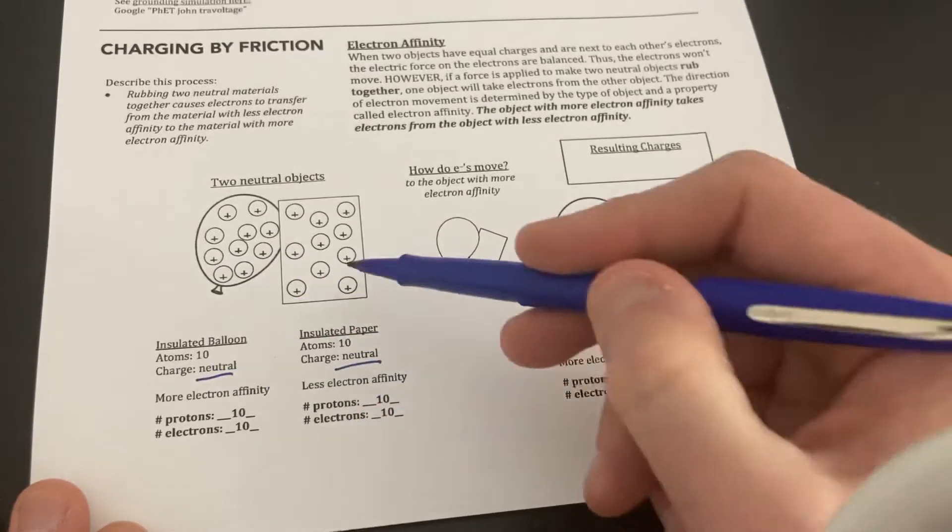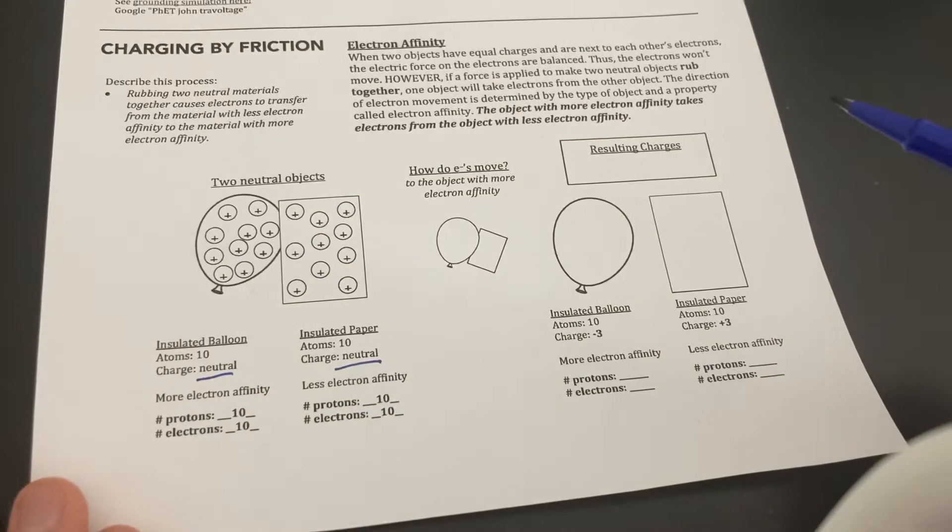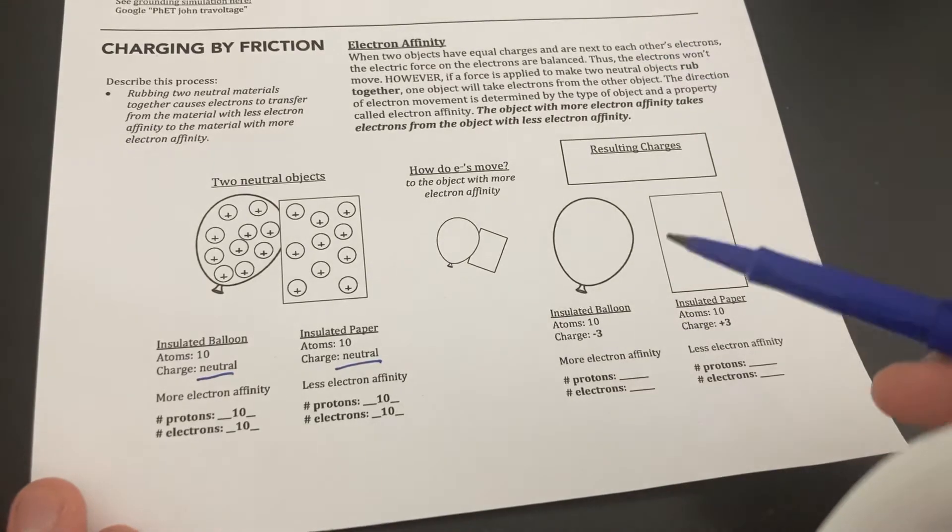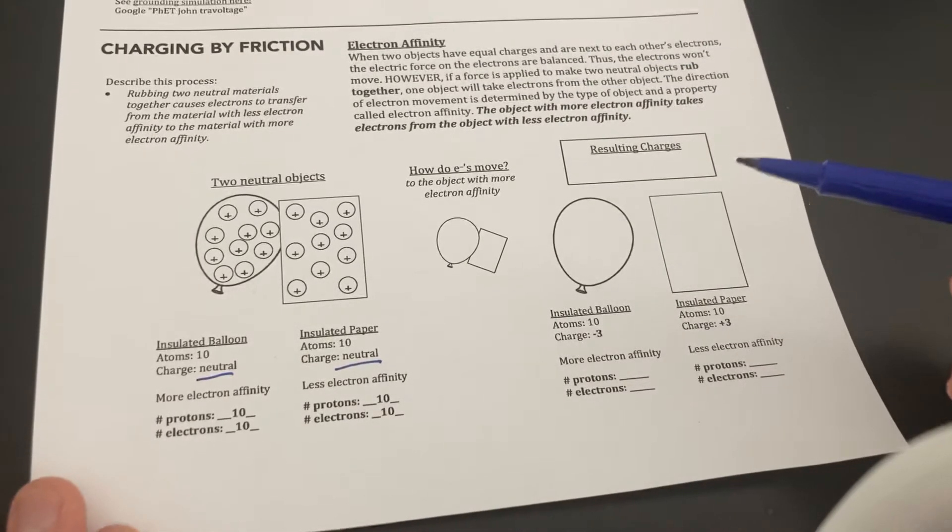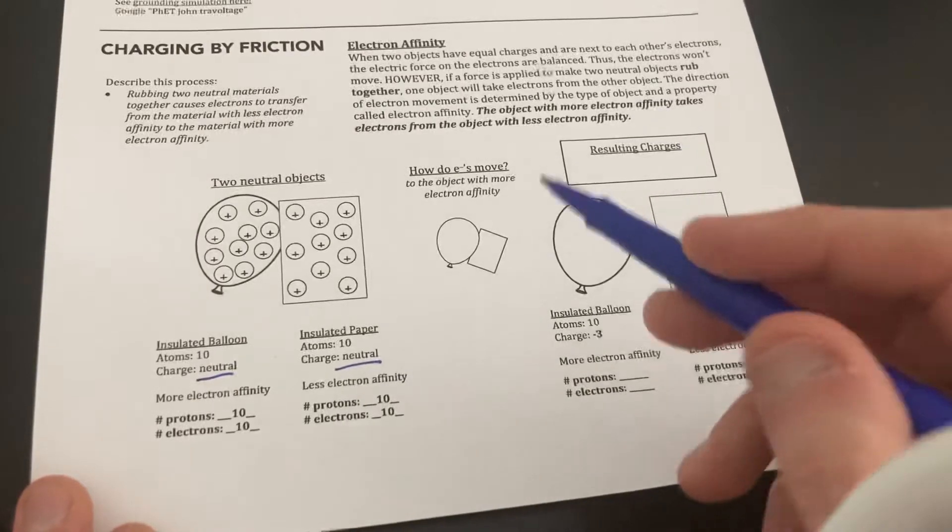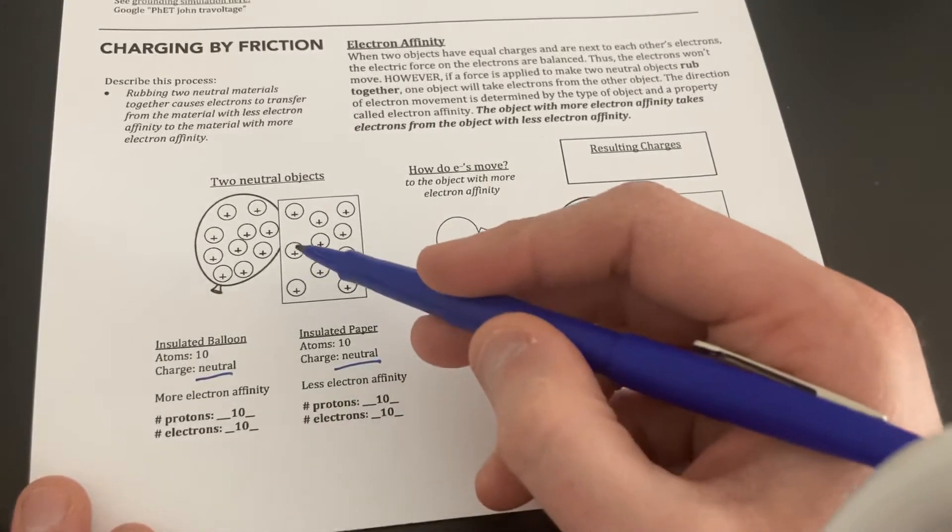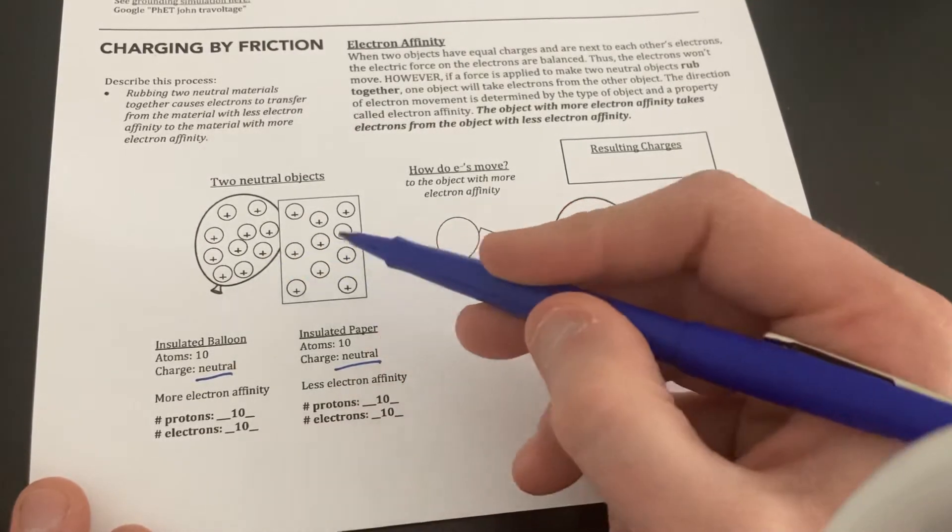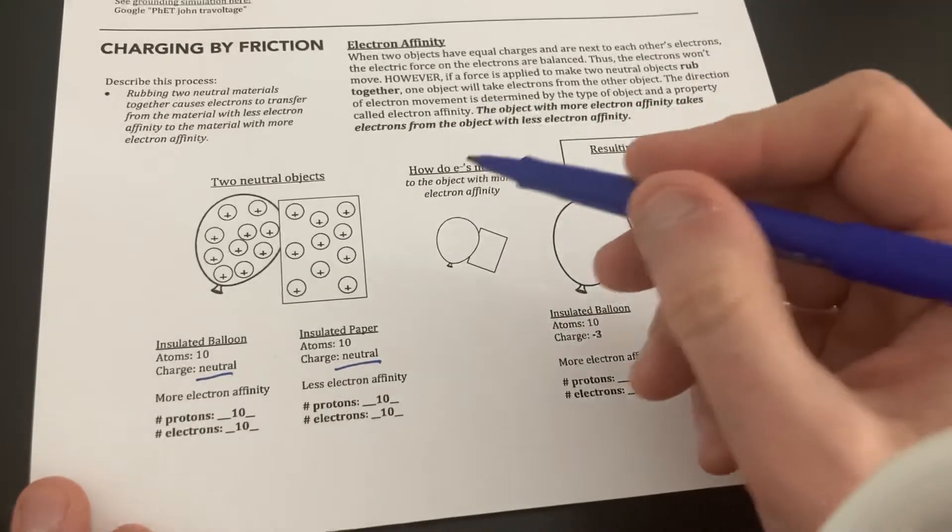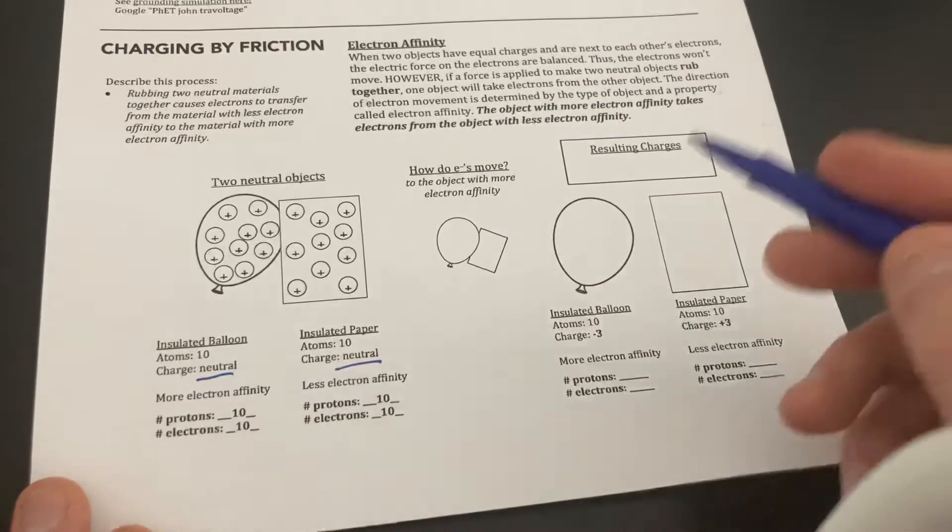We have a neutral and a neutral object. So these electrons are actually as happy as they could be, but we could charge them. We could essentially cause some electrons to build up on one object and leave another. So in order to do that, what we need to do is we need to rub these two objects together. You can't just put them next to each other and electrons will jump. Again, they are happy. So we need to create some sort of friction.